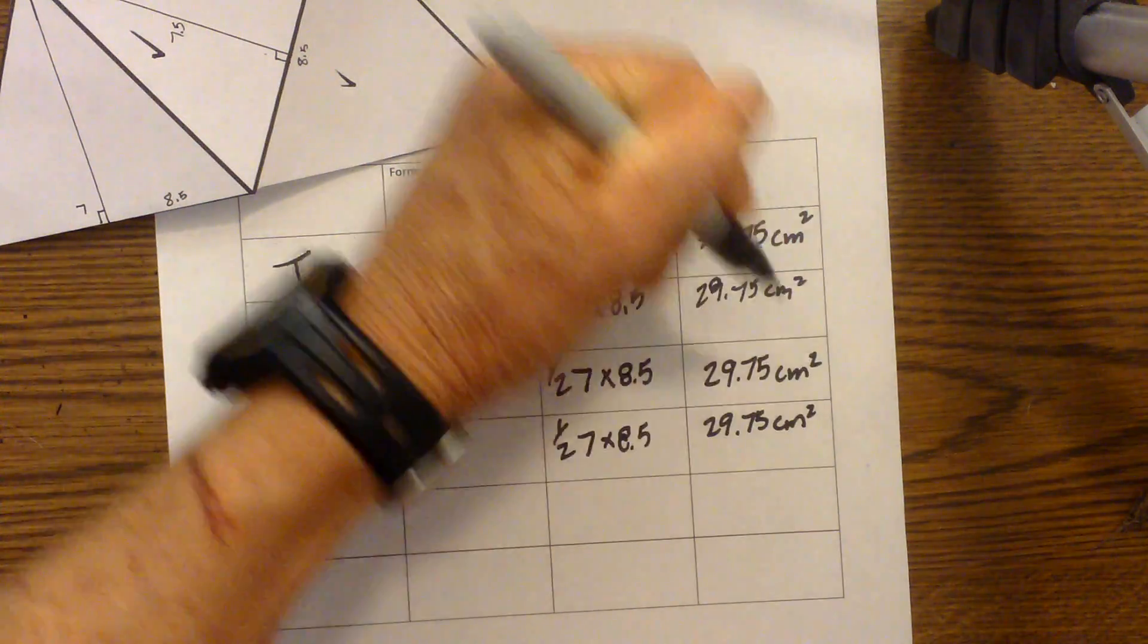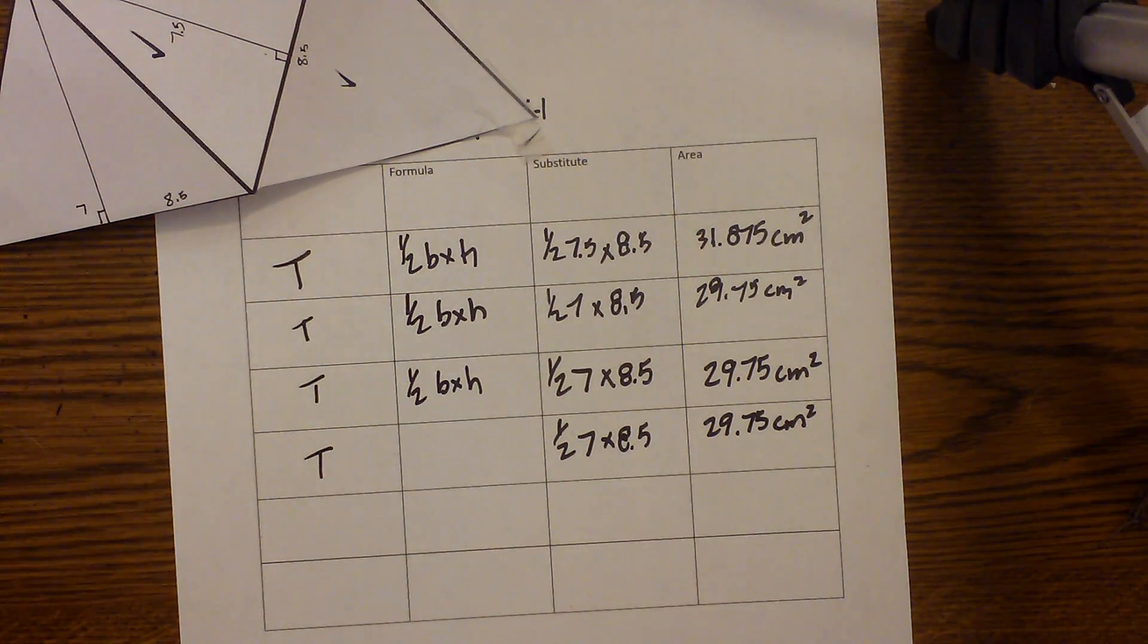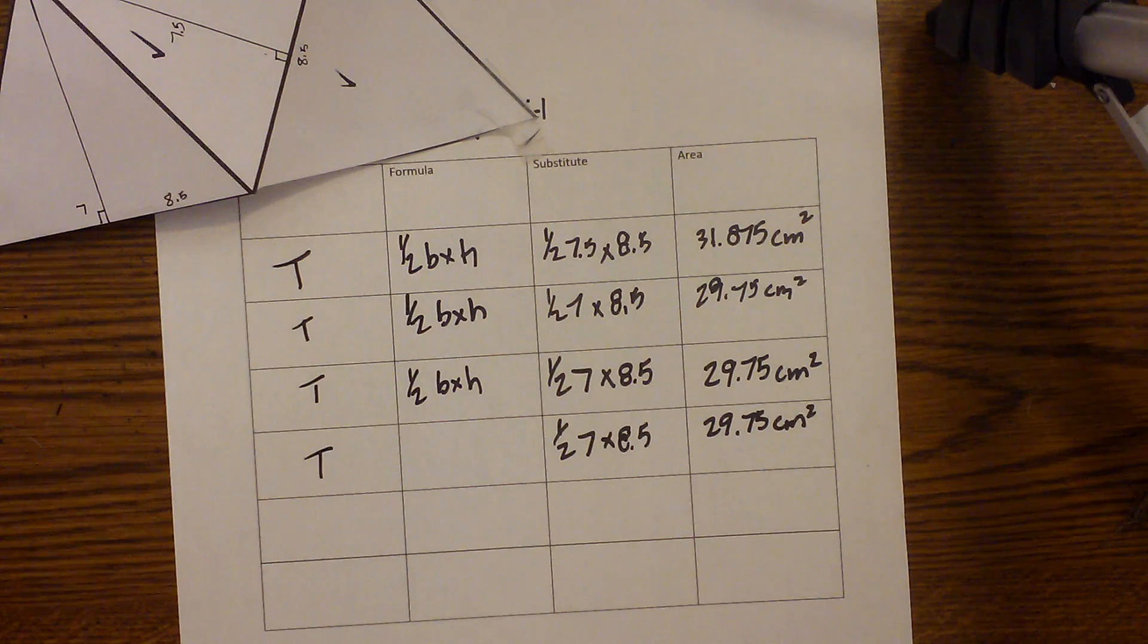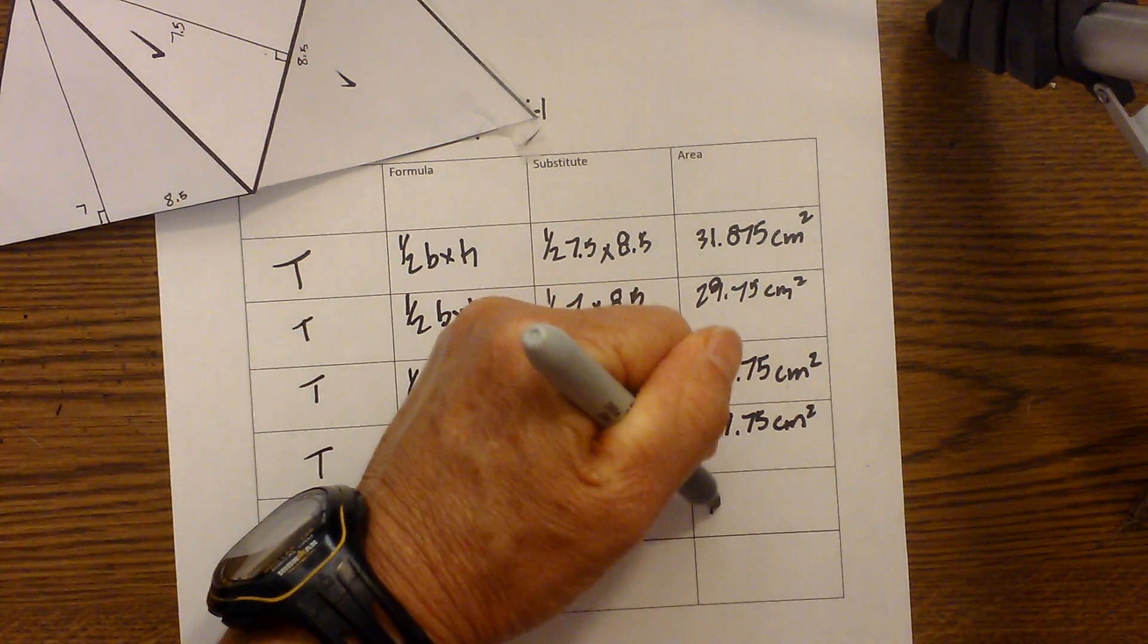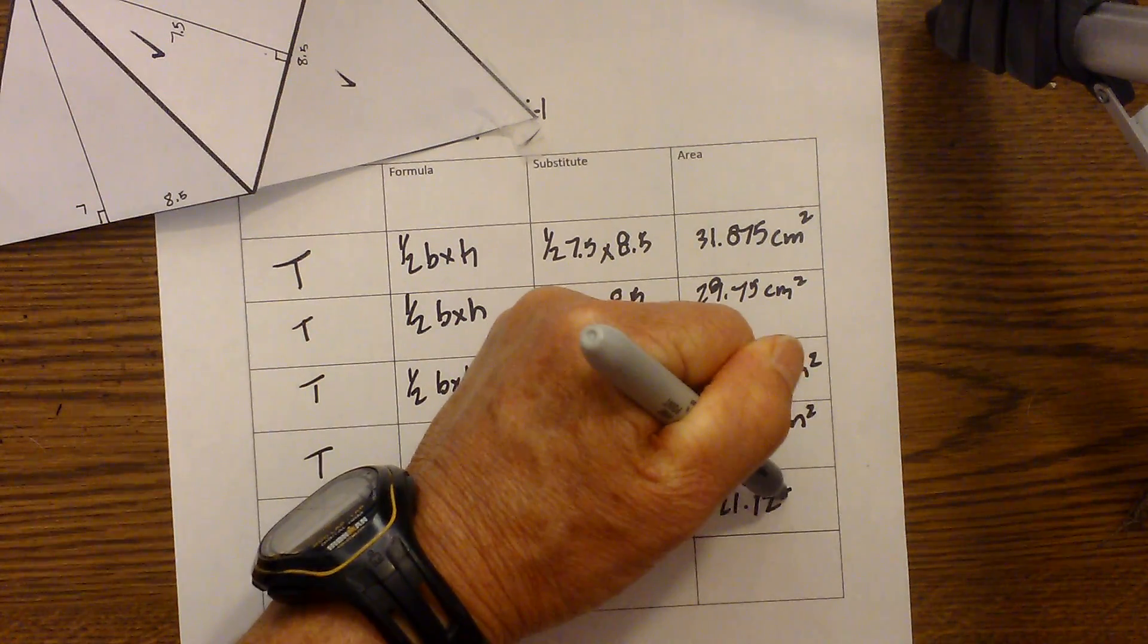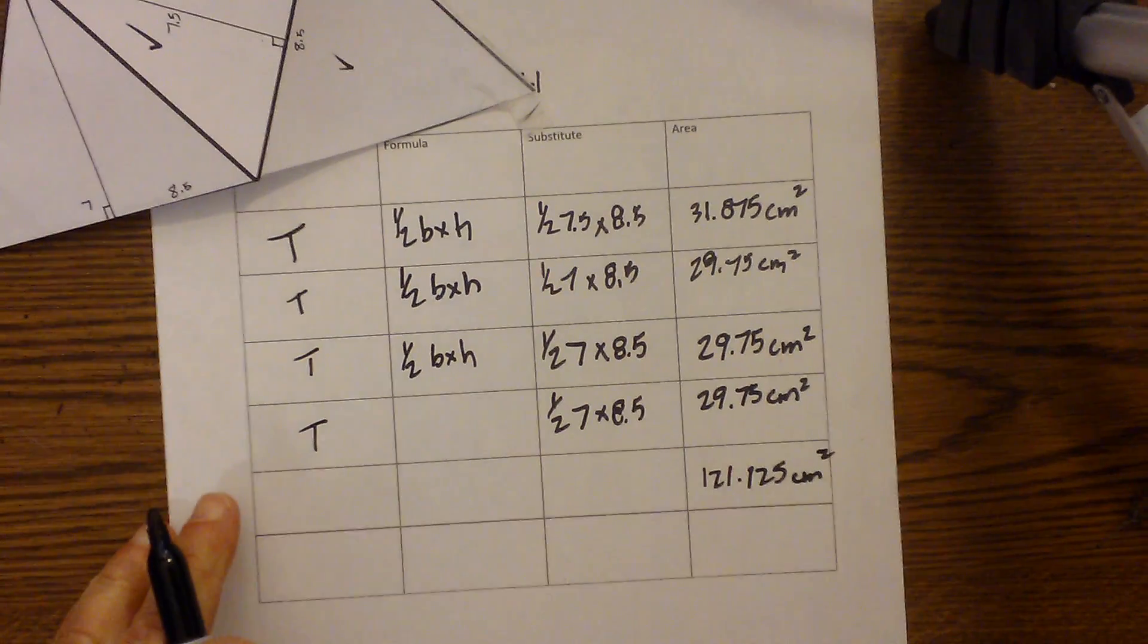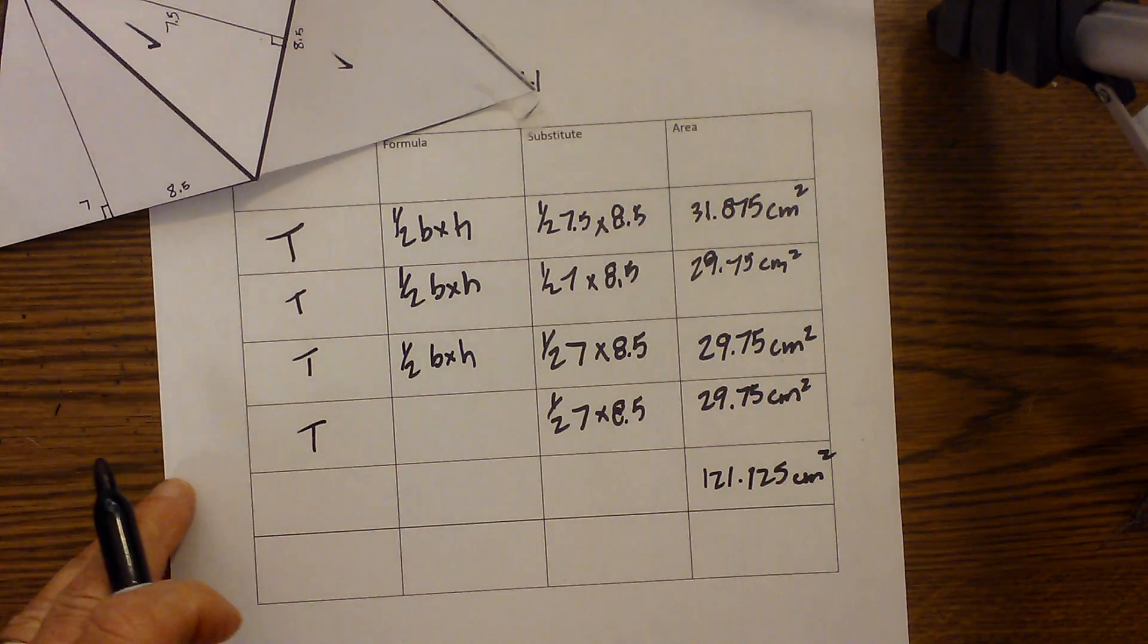Remember, these are areas, always squared. So now all I need to do is total all this up. I'm going to take 29.75 times three, because I have three of these, and that's 89.25, plus 31.875, and that equals 121.125 centimeters squared, because surface area is always squared.